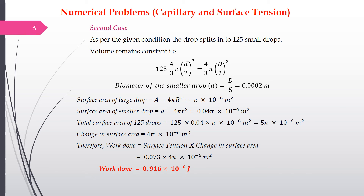Since the drop splits into 125 smaller drops, the volume is conserved. Volume of smaller drop × 125 = volume of the large drop. Using the spherical volume formula, where D denotes the large drop and d the small drop, we find the diameter of the smaller drop is d = D/5 = 0.0002 m.